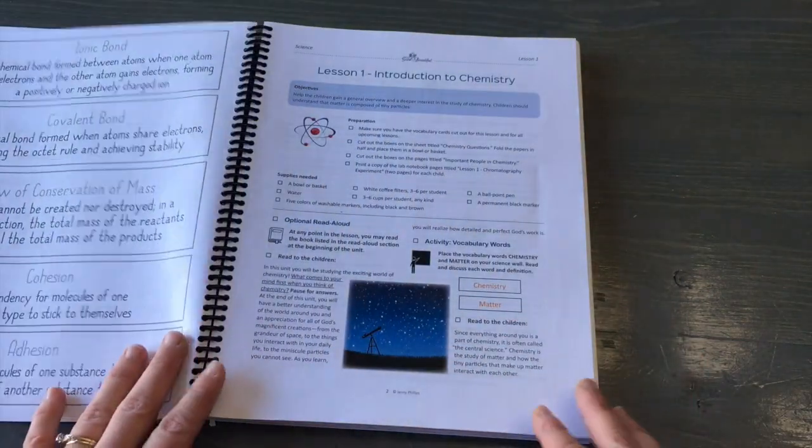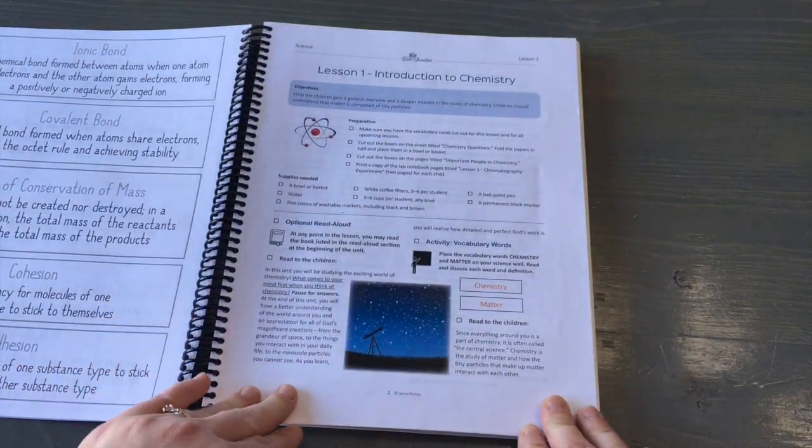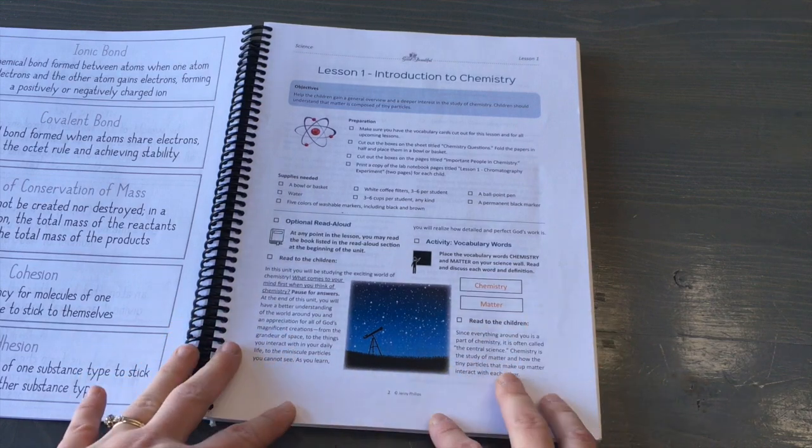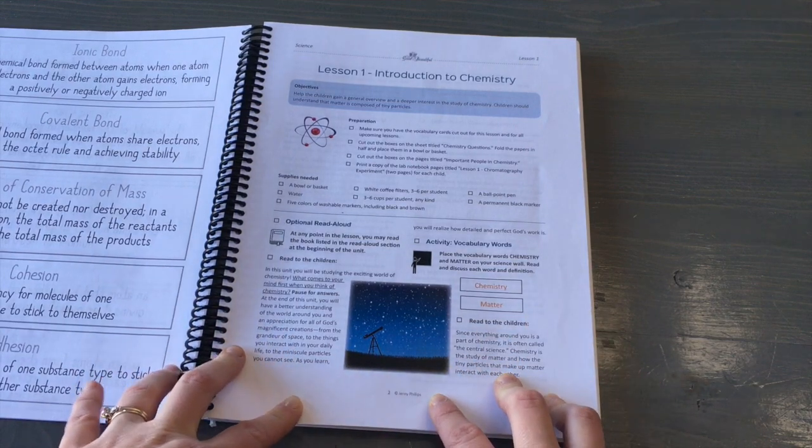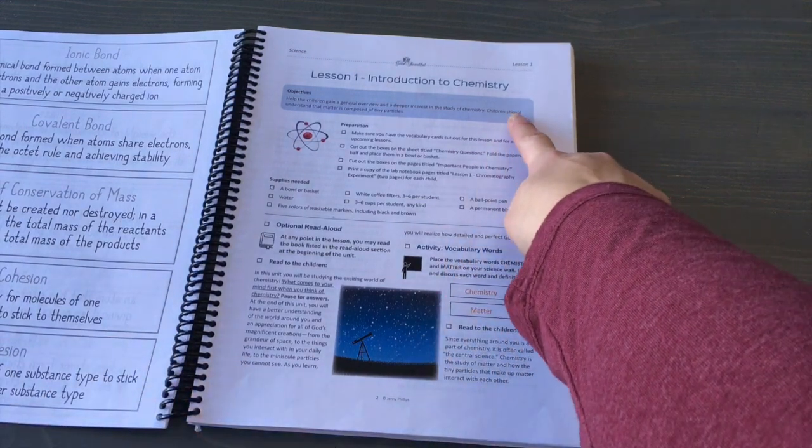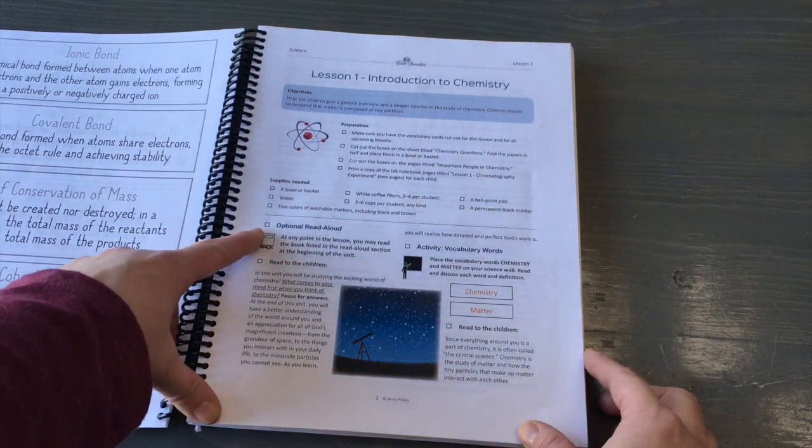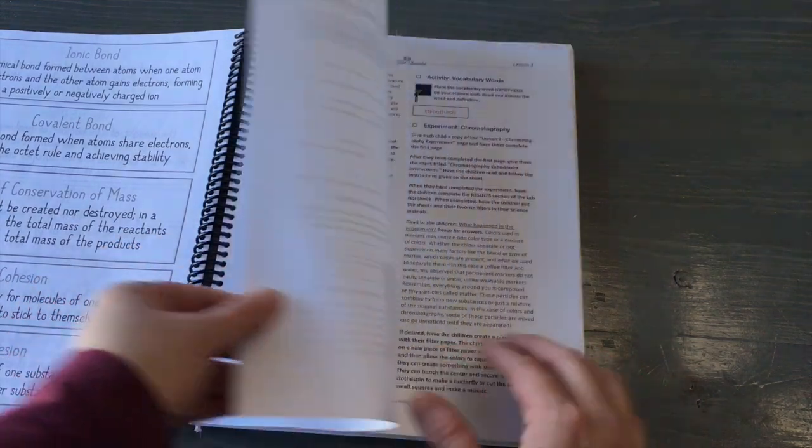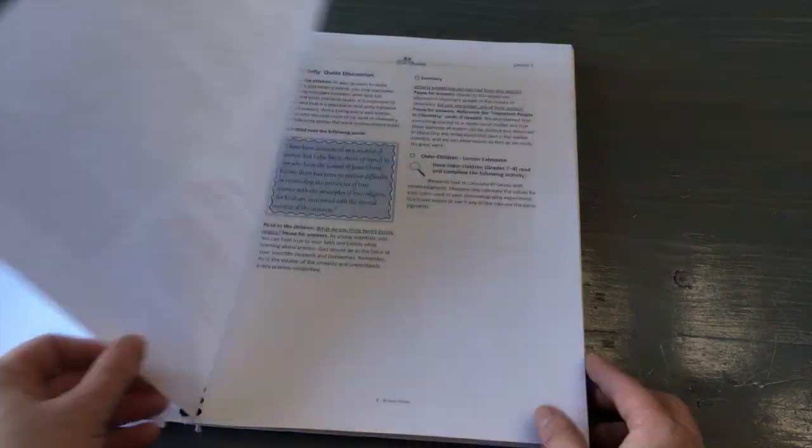So then it goes into a lesson. This is what a lesson looks like and I should mention this is one that I printed at home on my printer just if you're curious. So it prints really well at home. So it starts with the objectives, preparation, supplies needed and then these little sections you just follow the sections and do as it says.